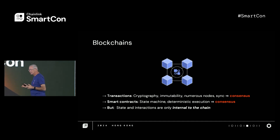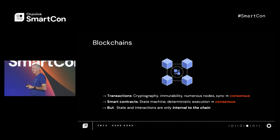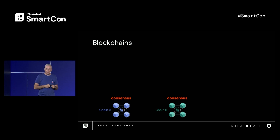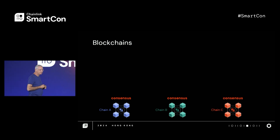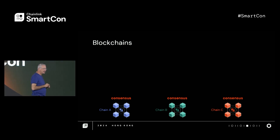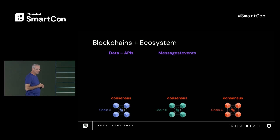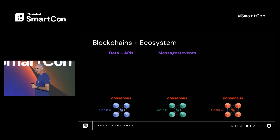All the state and interactions are internal to that chain by design — they're living in their own world. While it works great inside of one world, there are other worlds out there. Each one has its own contracts and its own ecosystem, and the consensus models vary a little bit across some of them. And there's a very important ecosystem outside of any blockchain: there's a lot of data out there that's really important. We've been serving that data for years, and it's often available behind Web 2 APIs. Some of that information is available only behind messages, such as the Swift messages that coordinate a lot of traditional finance systems, banks, and institutions.